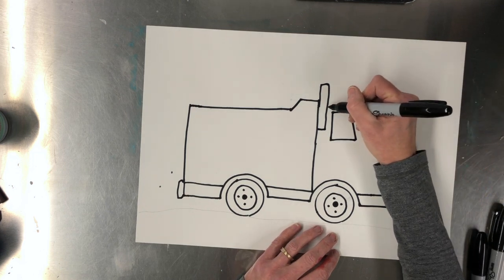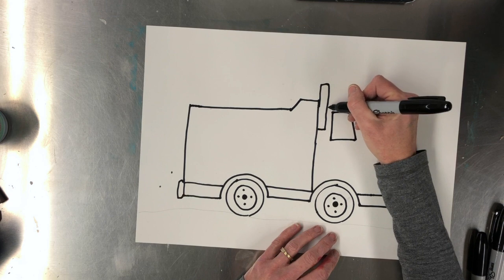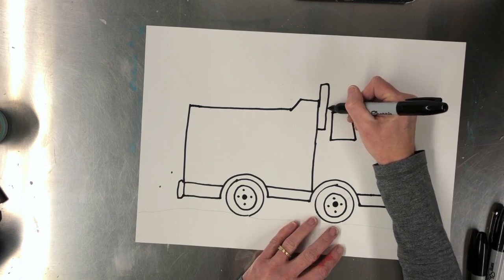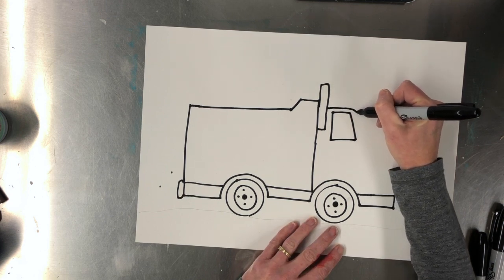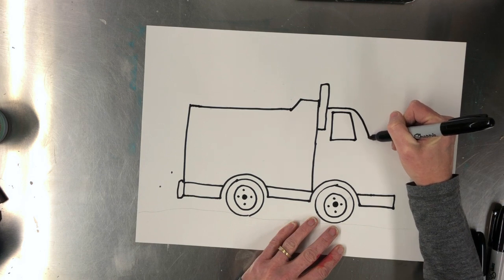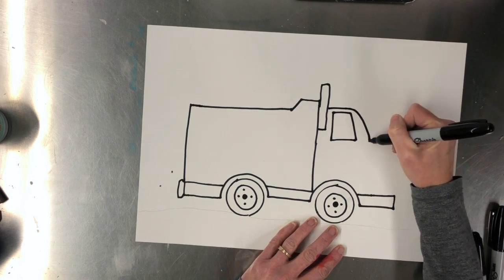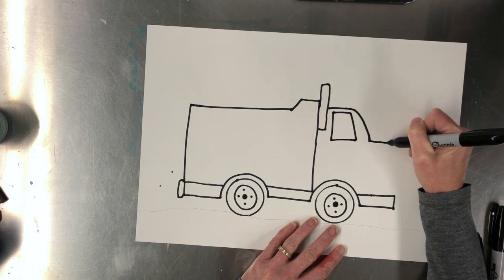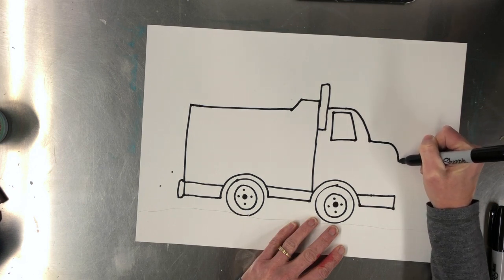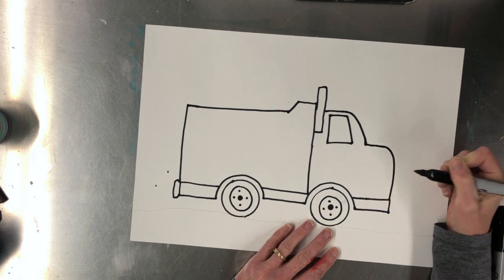Now starting a little bit, not this far out, but a little bit below, I'm going to come out and swing down. And we're going to make the front of our hood and we're going to come out and swing down for the front of our truck.